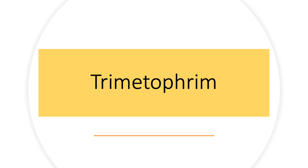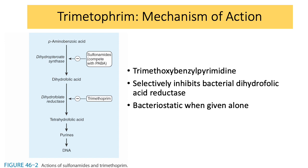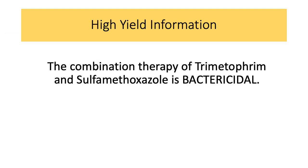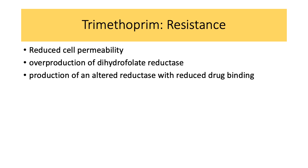Now let's go to trimethoprim. Trimethoprim selectively inhibits the bacterial dihydrofolic acid reductase, complementing the action of sulfonamides. This is bacteriostatic when given alone. High-yield information: trimethoprim or sulfamethoxazole, when given alone, is bacteriostatic only. However, when given as a combination therapy, they are bactericidal. Trimethoprim resistance is also attributed to mutations producing reduced cell permeability, overproduction of dihydrofolate reductases, and production of an altered reductase with reduced drug binding.